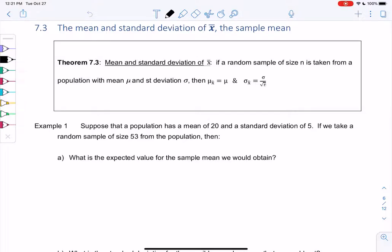Section 7.3, the mean and standard deviation of x-bar, the sample mean. So we have a theorem, the mean and standard deviation of x-bar. If a random sample of size n is taken from a population with mu and sigma, so these are values from the population, then mu x-bar is mu.